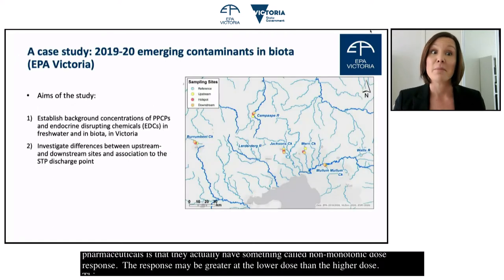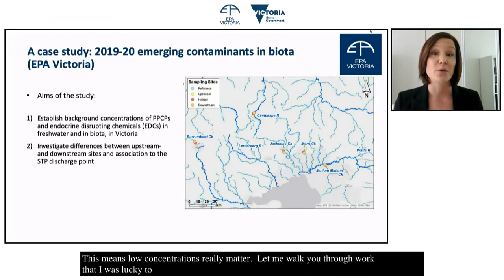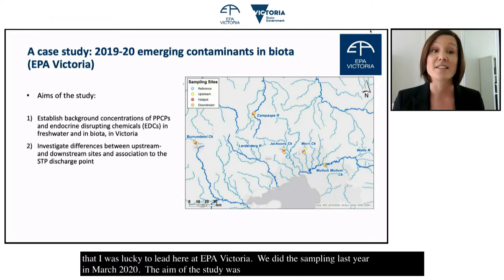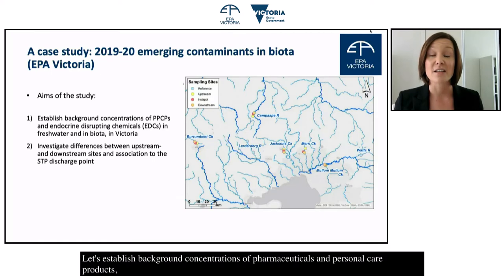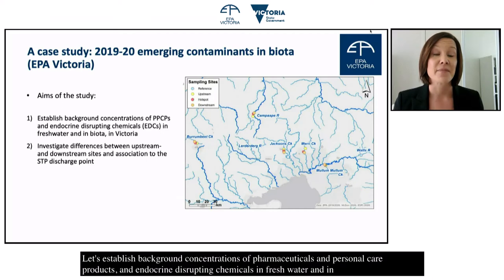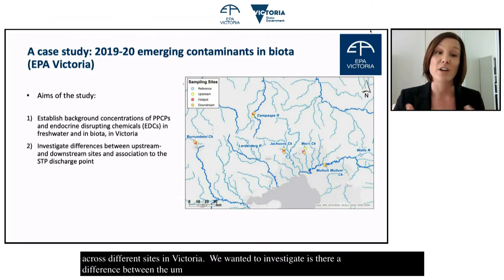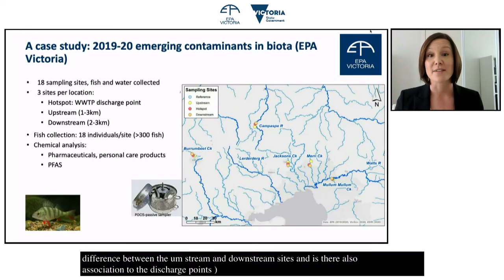What makes pharmaceutical pollution an especially emerging concern is that these chemicals have been designed to be highly active and interact with receptors in humans and animals. Because we're using them all the time, they are continuously released to the environment, meaning non-target organisms are exposed over a very long period of time. Pharmaceuticals also have something called non-monotonic dose response — the response may be greater at a lower dose than at a high dose — meaning that low concentrations really matter. This led us to conduct a study here at EPA Victoria, where sampling took place in March 2020.